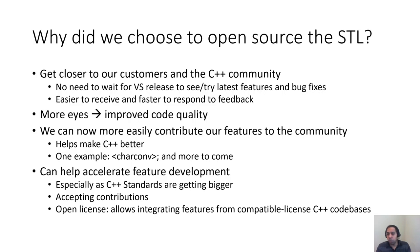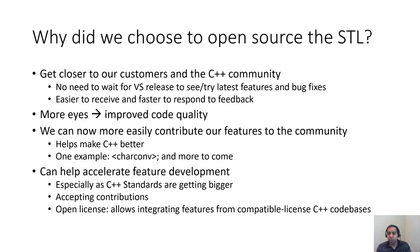Even more, many will find it easier to file and track issues on GitHub since both the issues and the code live in the same place. We also wanted to make it easier to contribute back to other open source libraries — for example, we are currently contributing charconv to libc++. There's also the aspect of code quality: with more eyes and more developers contributing, MSVC STL will become even more robust. With our open source license, we are welcoming code contributions from the wider C++ community, which has already had a significant positive impact on the rate of implementing C++20 features.